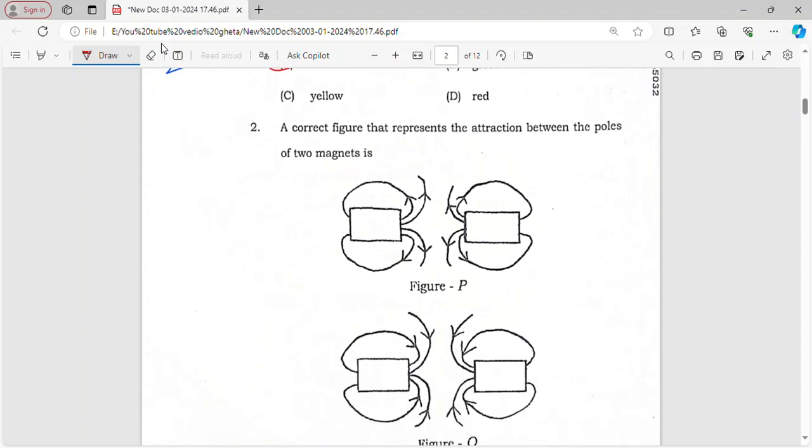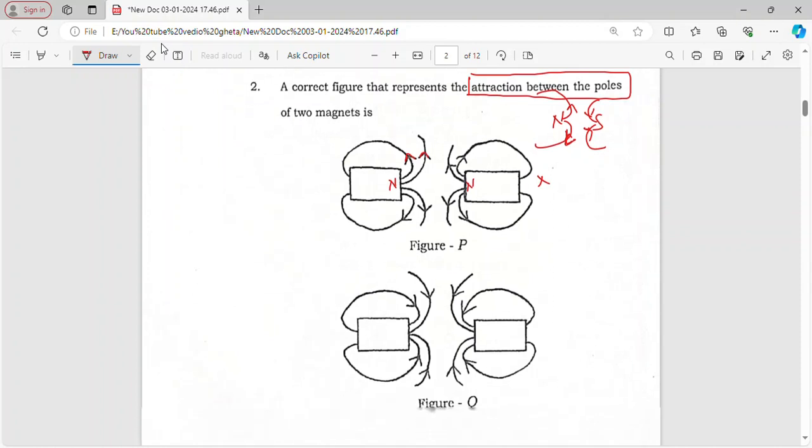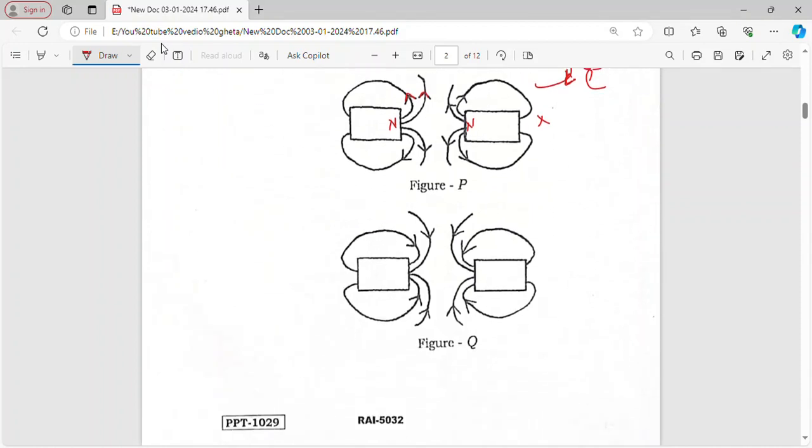A correct figure represents attraction between poles. You know North Pole and South Pole only will attract. The magnetic field lines arise from the North Pole. In this case they should show merging. You can see the magnetic field line arising from a North - this is not like because it is coming out. Here you can see the magnetic field line is merging in, so it is a South Pole. Here also it is a South Pole because it is also coming in.